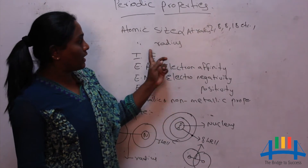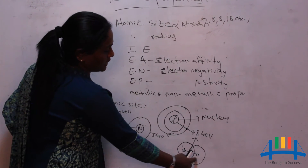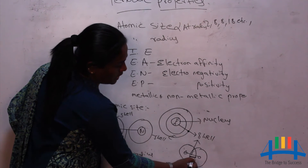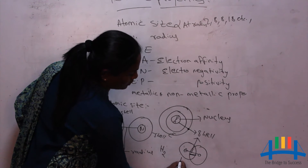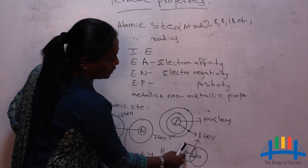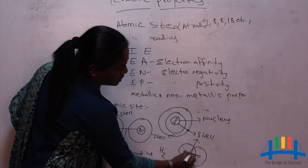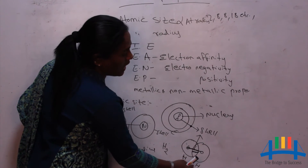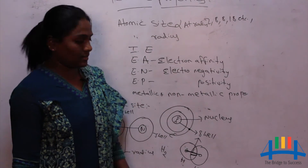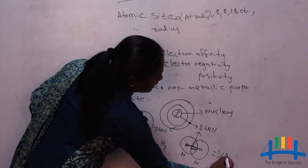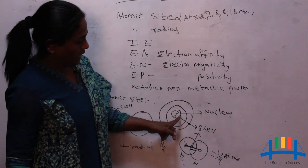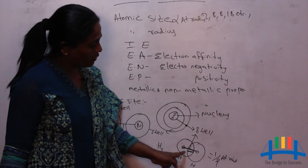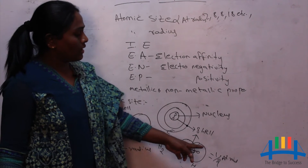One is covalent radius. Covalent radius means the distance between the two nuclei of two bonded atoms. If you take hydrogen — this is one H and this is one more hydrogen — these two are the nuclei of each hydrogen. So it is the distance between these two nuclei, and half of the distance between the two nuclei of two covalently bonded atoms is called the covalent radius. You can also say atomic radius means the distance between the nucleus and its outermost shell, and half of the distance between the two nuclei of two covalently bonded elements is called the covalent radius.